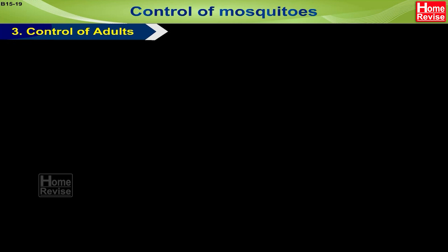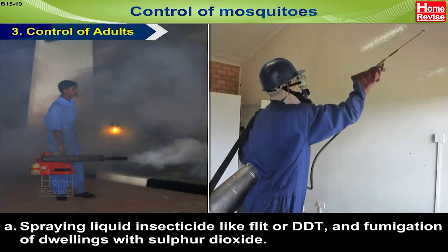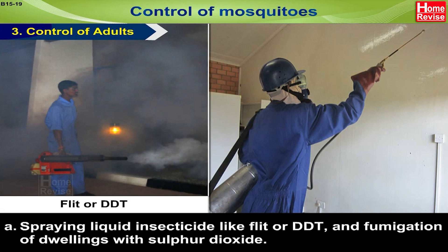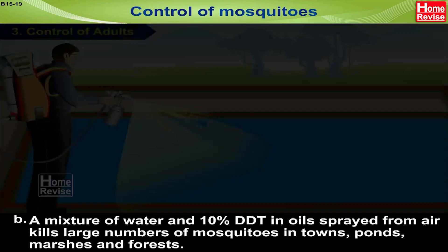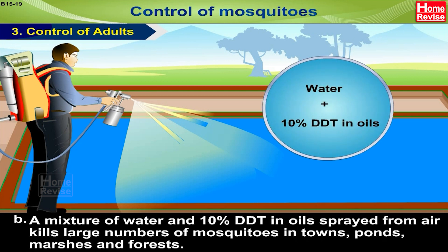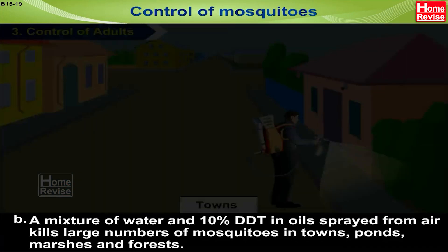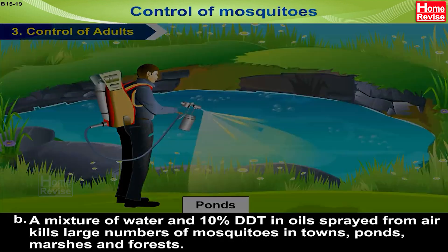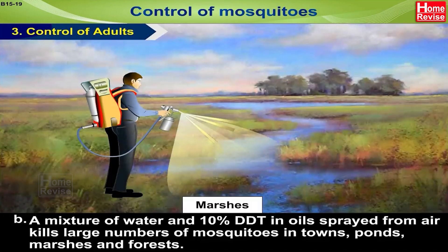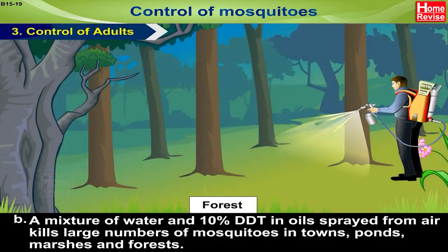Number three: control of adults. A) Spraying liquid insecticides like DDT and fumigation of dwellings with sulphur dioxide. B) A mixture of water and 10% DDT in oil sprayed from the air kills large numbers of mosquitoes in town ponds, marshes and forests.